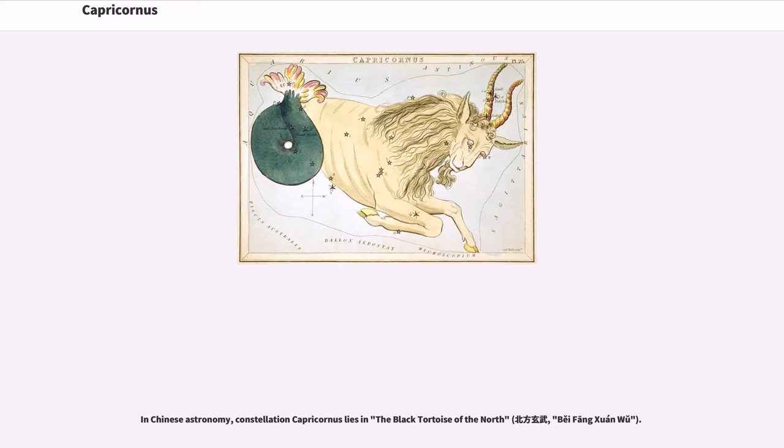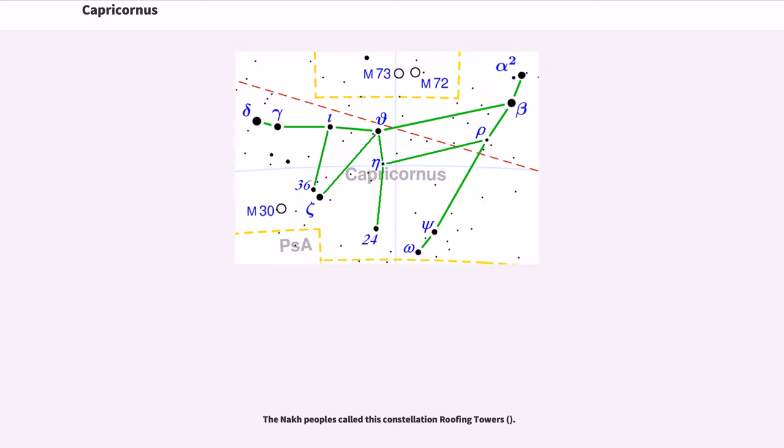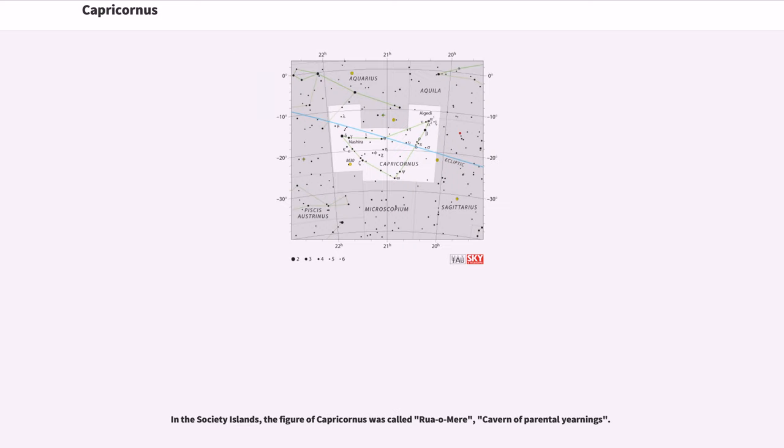In Chinese astronomy, constellation Capricornus lies in the black tortoise of the north, Bei Fang Xuan Wu. The Nakh peoples call this constellation roofing towers. In the Society Islands, the figure of Capricornus was called Rua O Miri, cavern of parental yearnings.